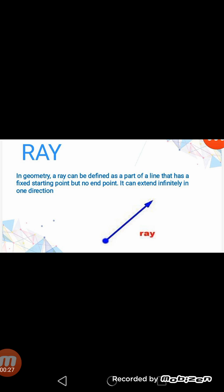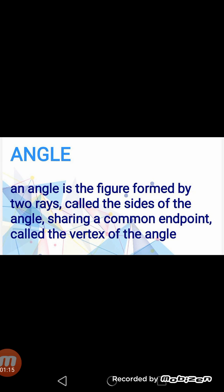Before starting angles directly, let's revise the concept of a ray, which is directly related to angles in geometry. A ray can be defined as a part of a line that has a fixed starting point but no end point. It can extend infinitely in one direction. As you can see on your screen, in the diagram, a line starts with a fixed point but extends in one direction and keeps going — it has no ending.